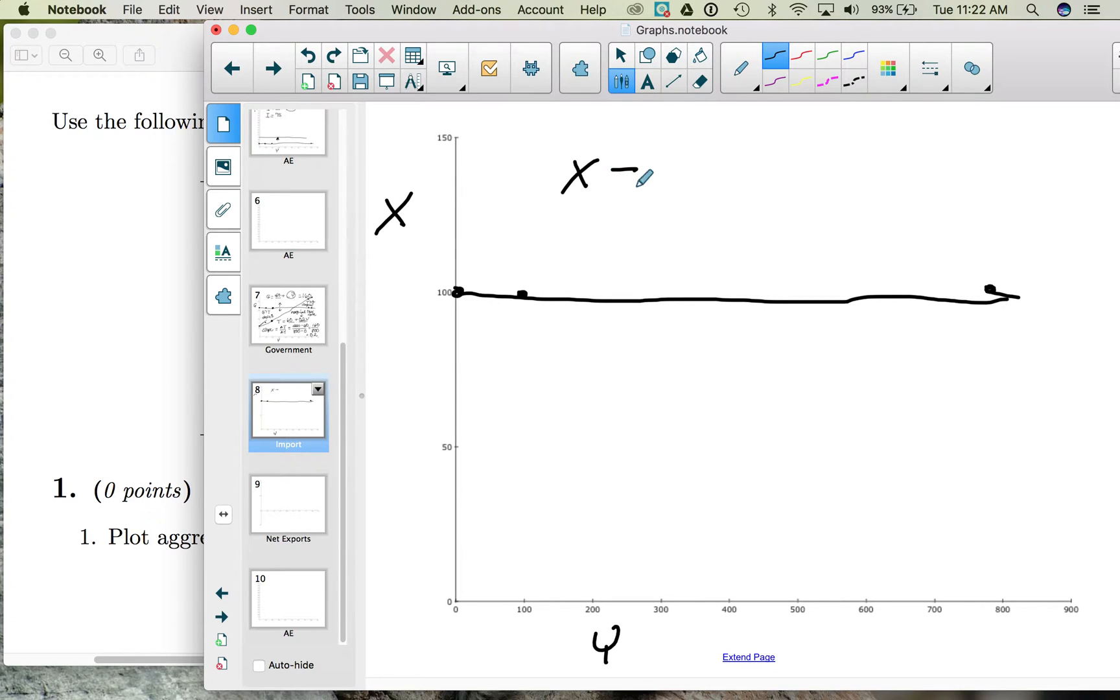We can find a formula for exports, just like we've been finding a formula for our other types of spending, autonomous plus induced. Notice that when income is zero, export spending is 100. So we have autonomous export spending of 100. As income increases, export spending does not change, so we have no induced spending. Export spending is completely autonomous of our national income.